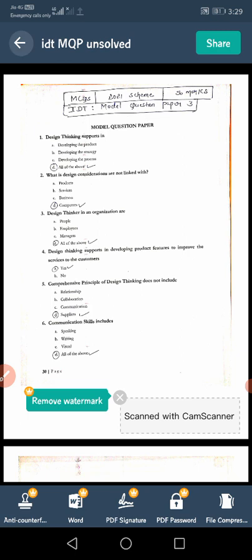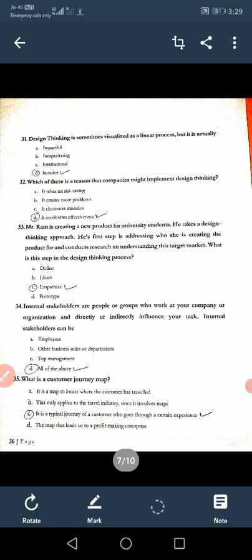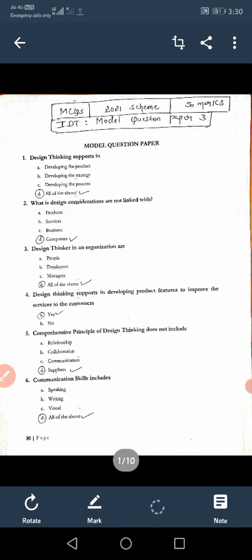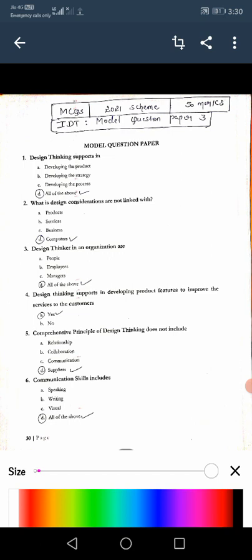Now I am going to explain here one by one, just observe. MCQs, it is 2021 scheme 50 marks IDT subject, it is a model question paper number three. For the first two I will explain in the next video.